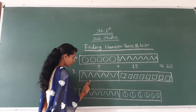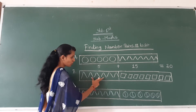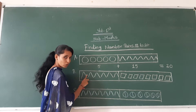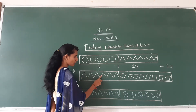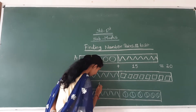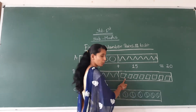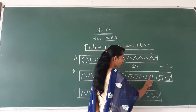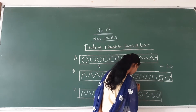In this example B, how many in the first block — how many lines here? 1, 2, 3, 4, 5, 6, 7, 8, 9, 10, 11, 12 more. And how many boxes here? 1, 2, 3, 4, 5, 6, 7, 8. Eight boxes here.